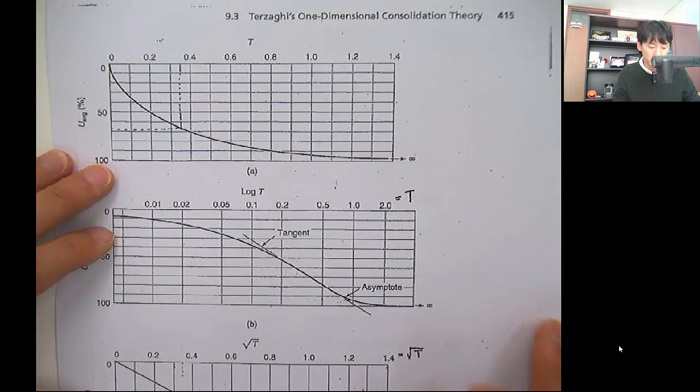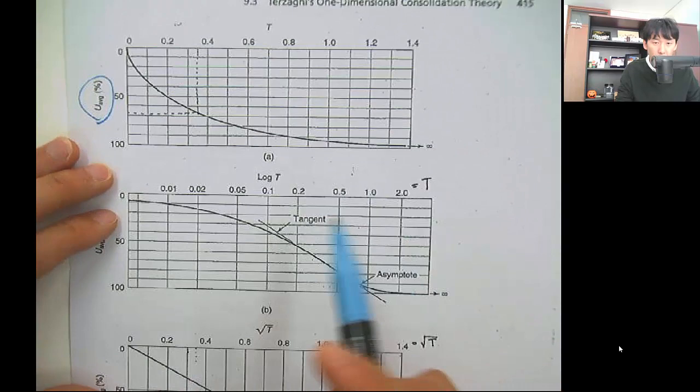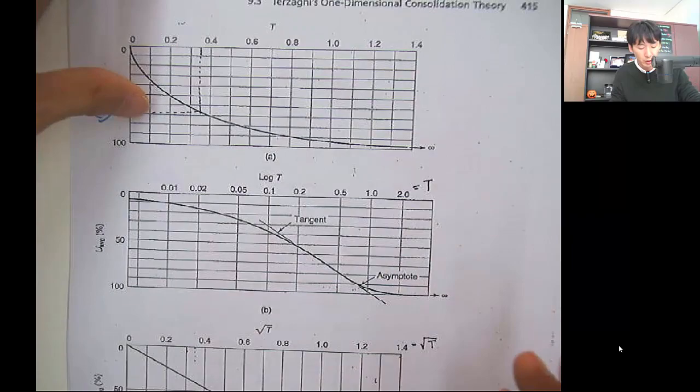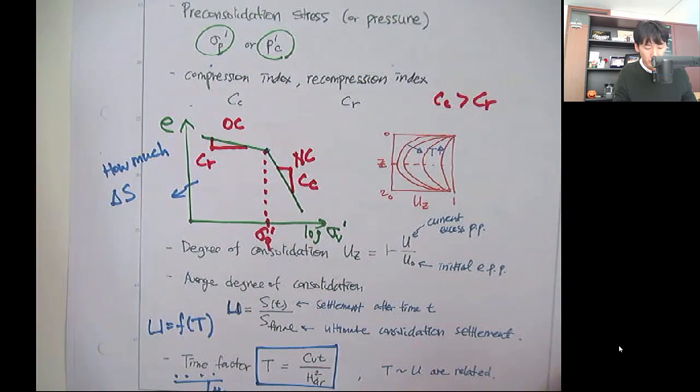When you compute the time factor T, you can calculate the average degree of consolidation using a chart or approximate equations. As the time factor increases, U_avg also increases. There are approximate equations to calculate the average degree of consolidation from the time factor T, which we'll discuss later in this lecture.